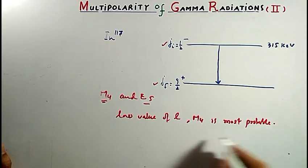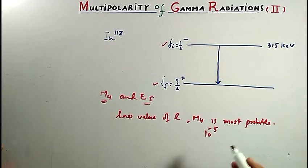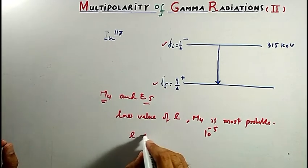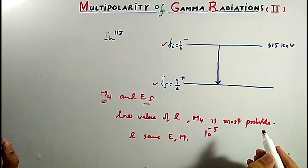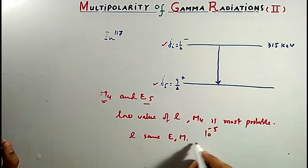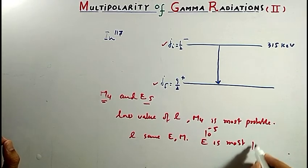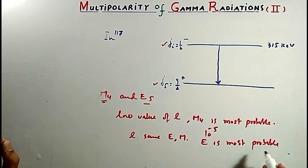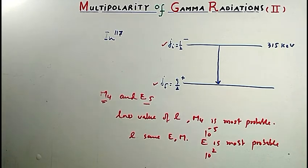The probability order for M4 is 10 to the power minus 5. However, if L is the same for both E and M type transitions, then E type is found to be most probable, with probability order 10 to the power of the relevant value. This concluded our discussion on multipolarity of gamma radiations.